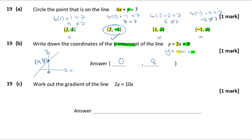Question 19c — work out the gradient of the line 2y = 10x. To match the form y = mx + c, divide both sides by 2: y = 5x. The gradient m is the coefficient of x, so m = 5.